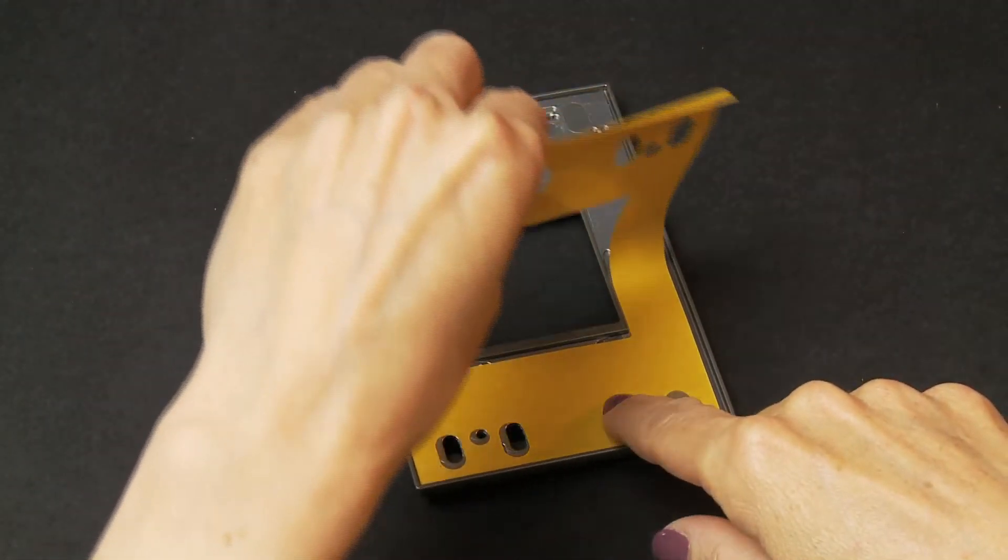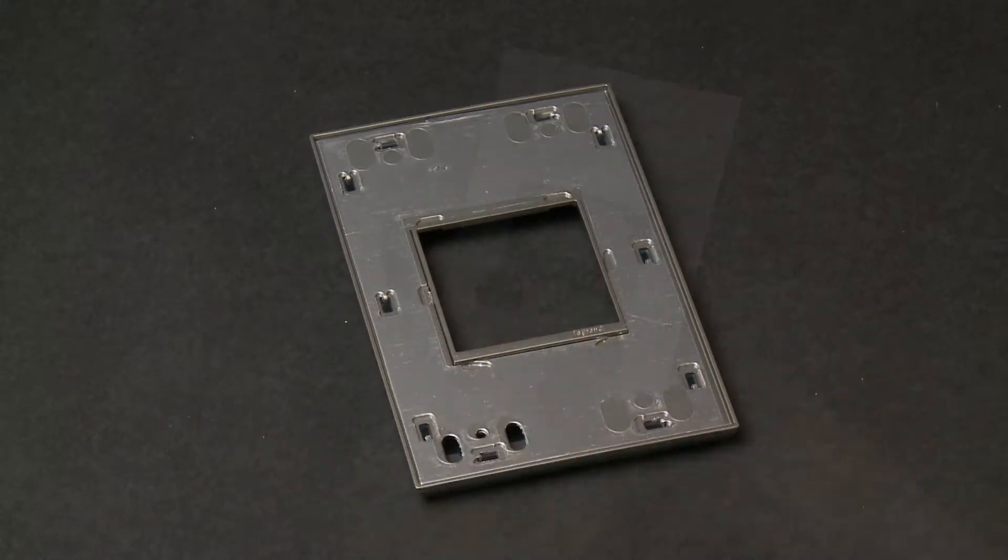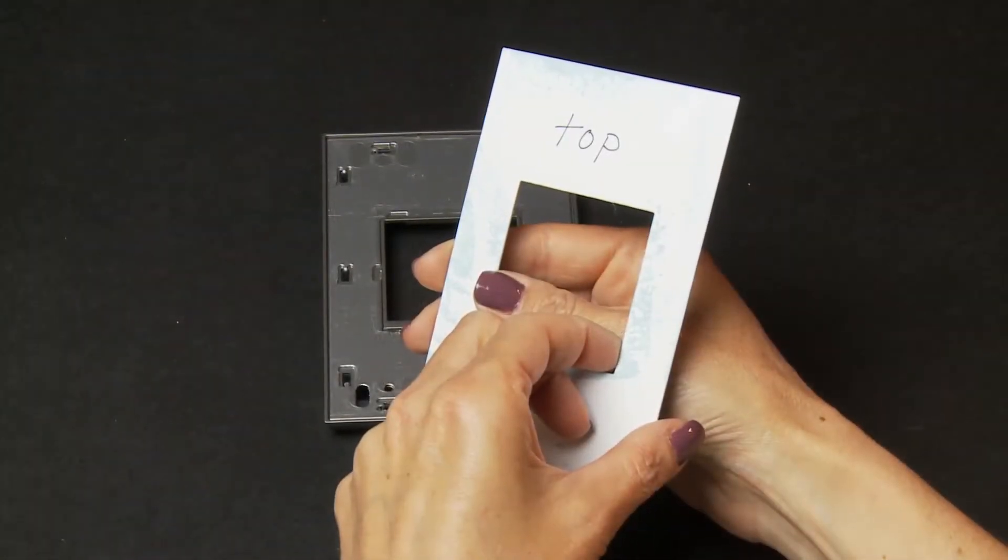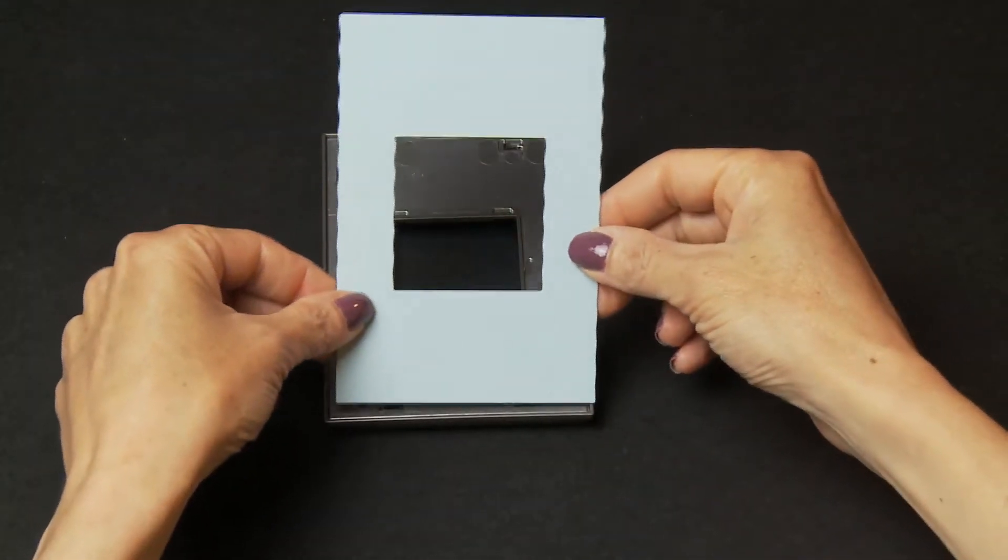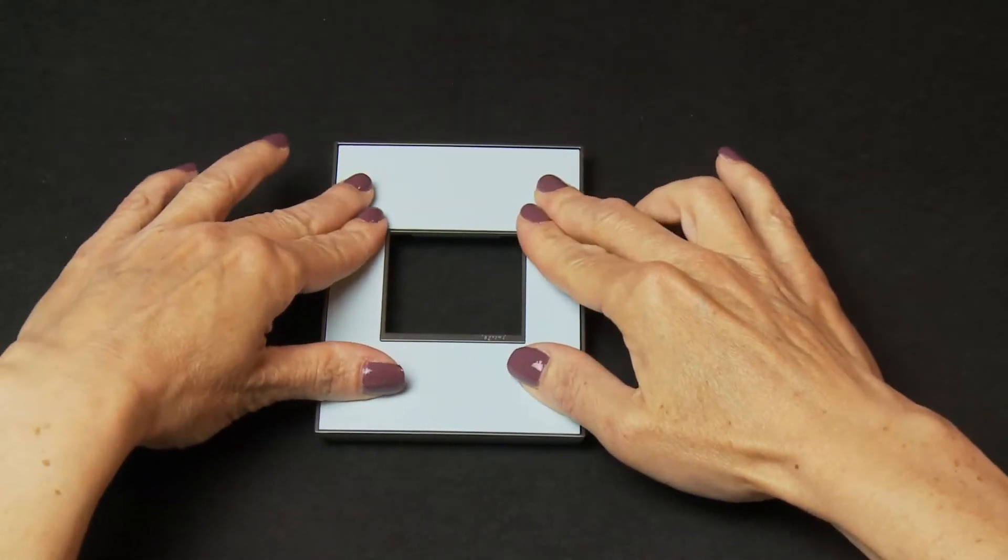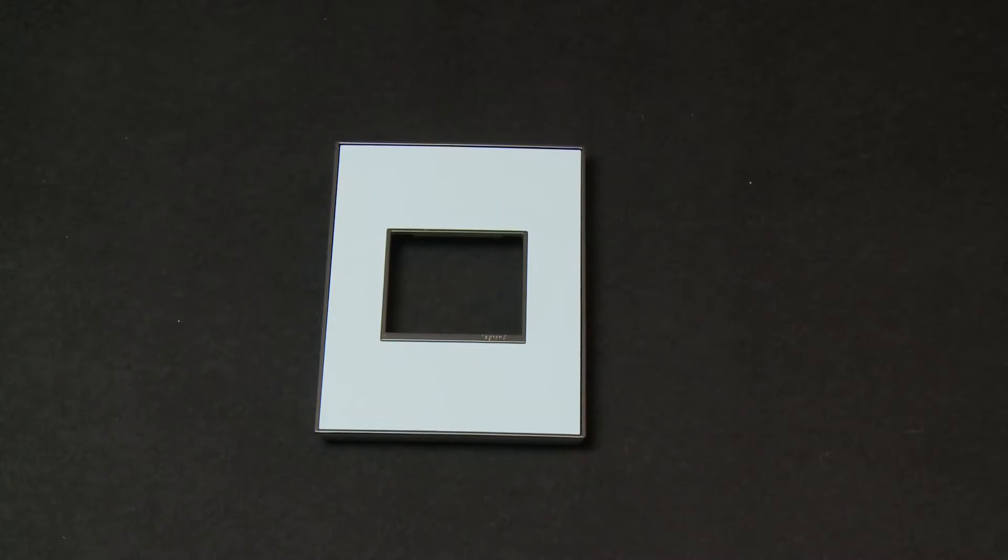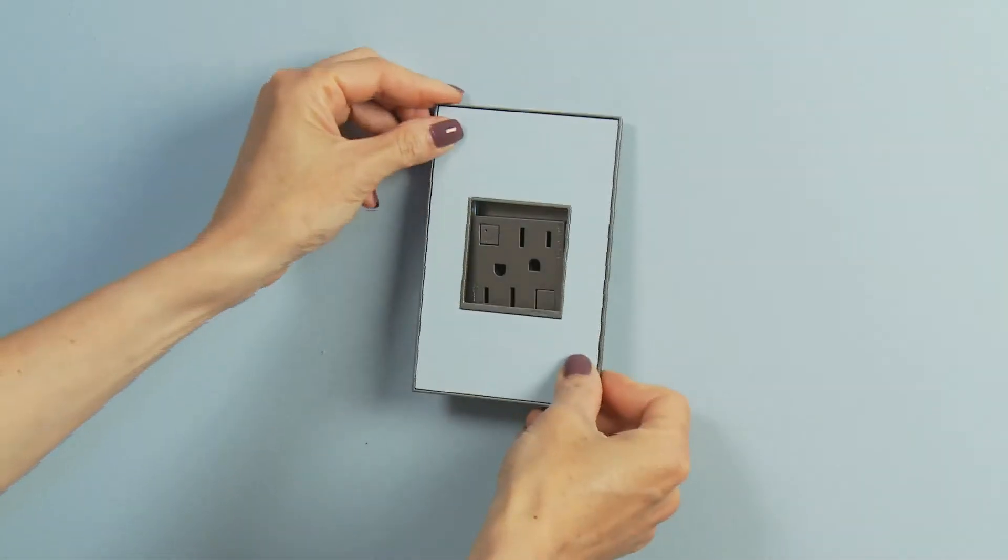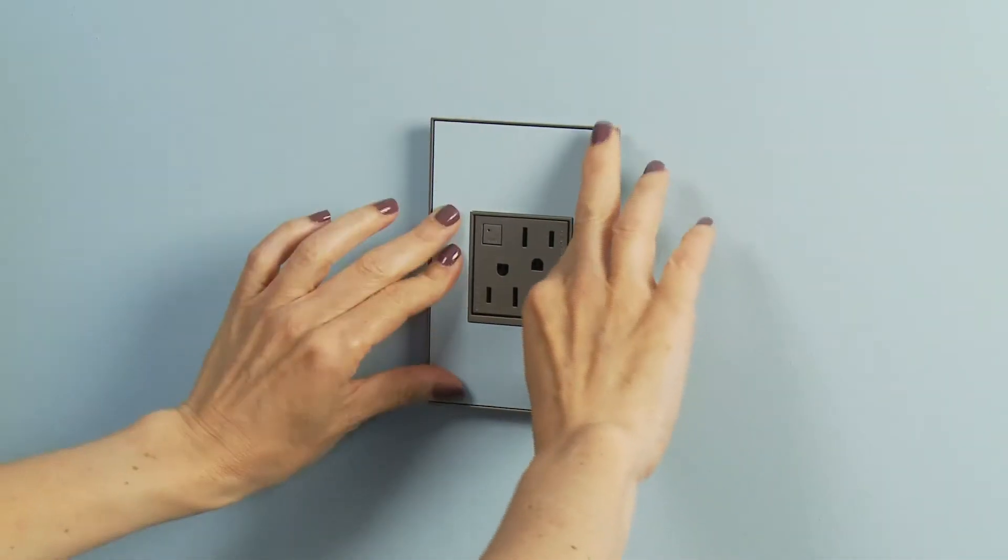Pull the peel and stick covering off the Adorn wall plate and place the painted template on, with the side labeled top facing down. Firmly press on the template to be sure it's securely attached to the wall plate. Now your Adorn wall plate is ready to be installed.